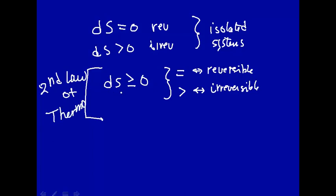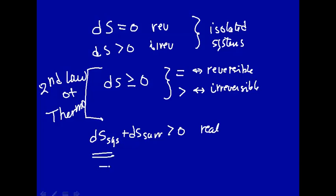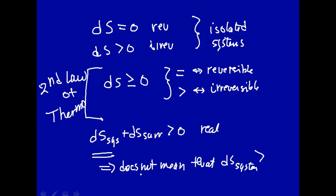The entropy of the universe is increasing — the entropy of an isolated system is always increasing. Note that we said ds of the system plus ds of the surroundings has to be greater than zero for real processes. This does not necessarily mean that ds of the system always has to be greater than zero. In general, the second law does not mean that the entropy of the system has to increase with time.